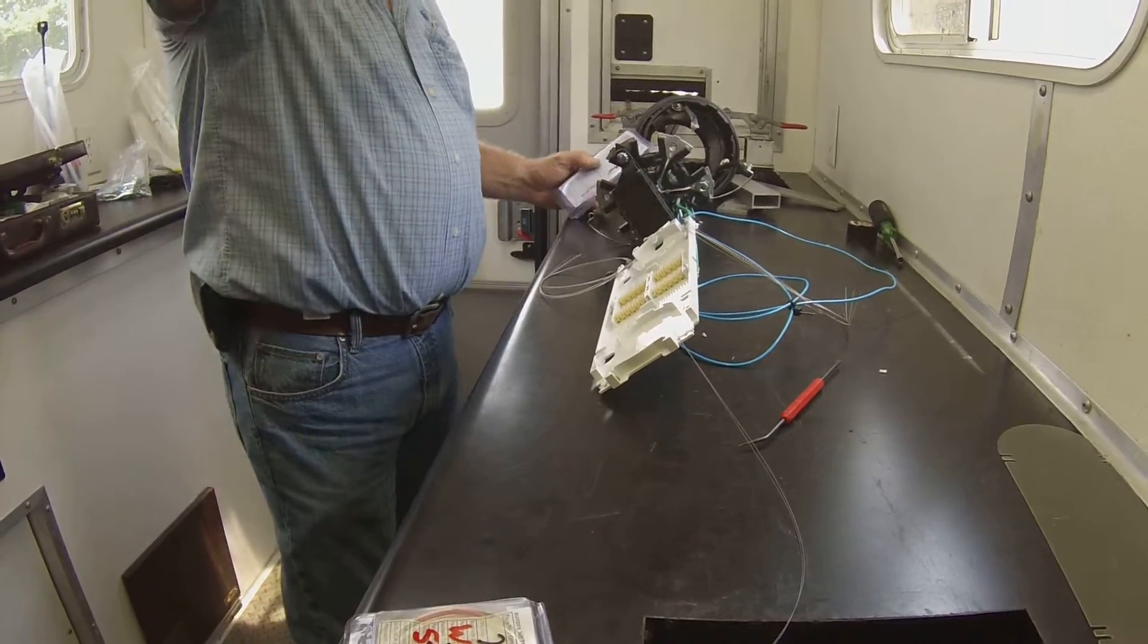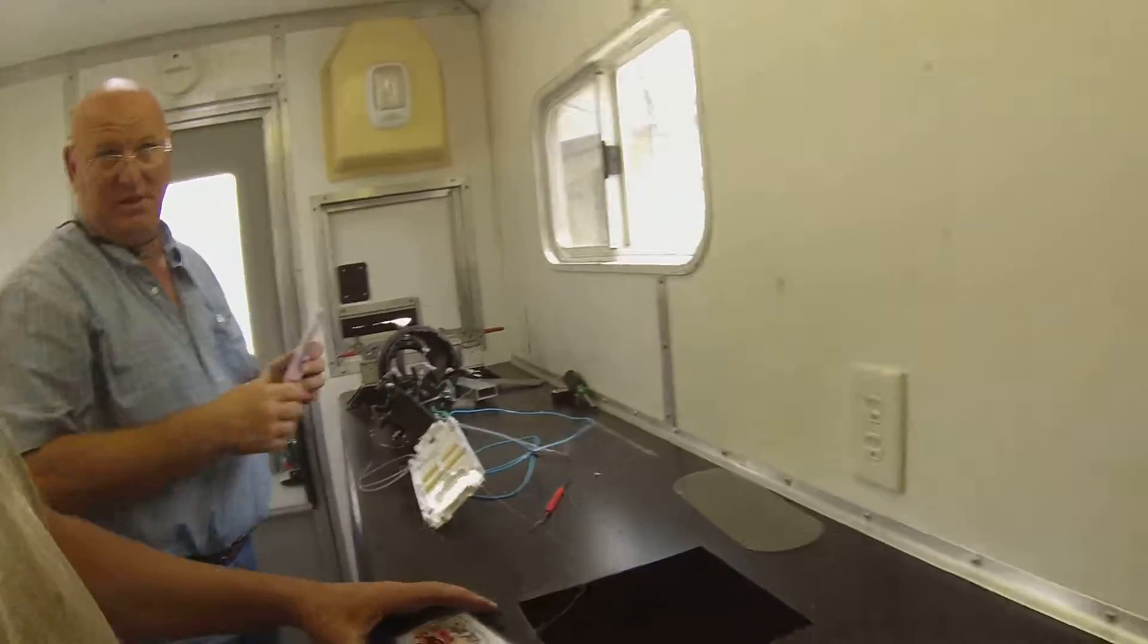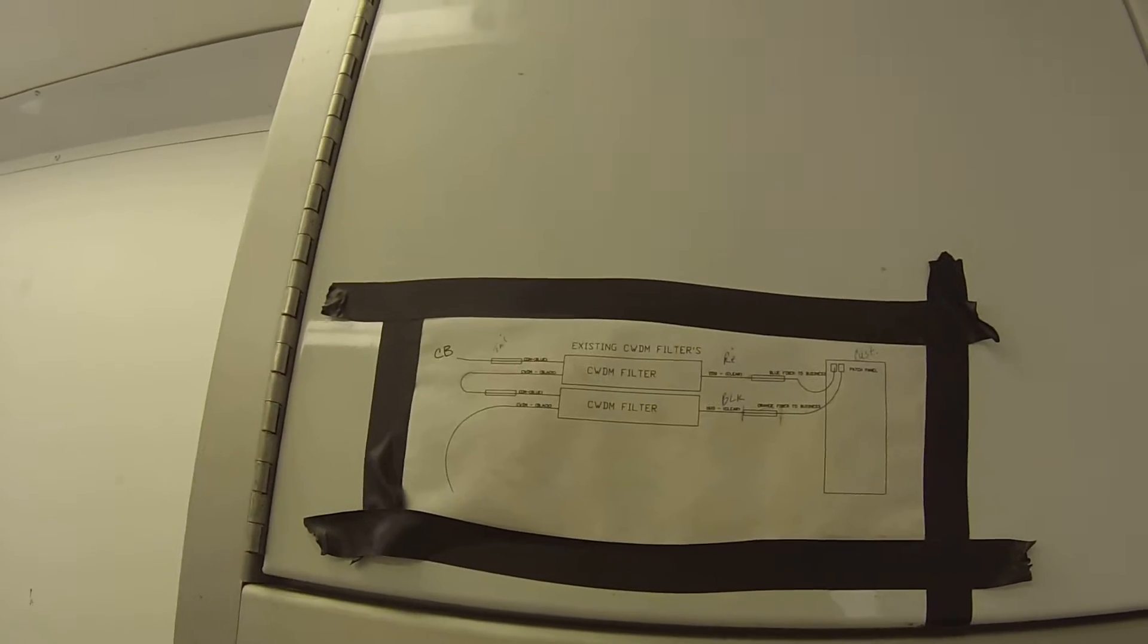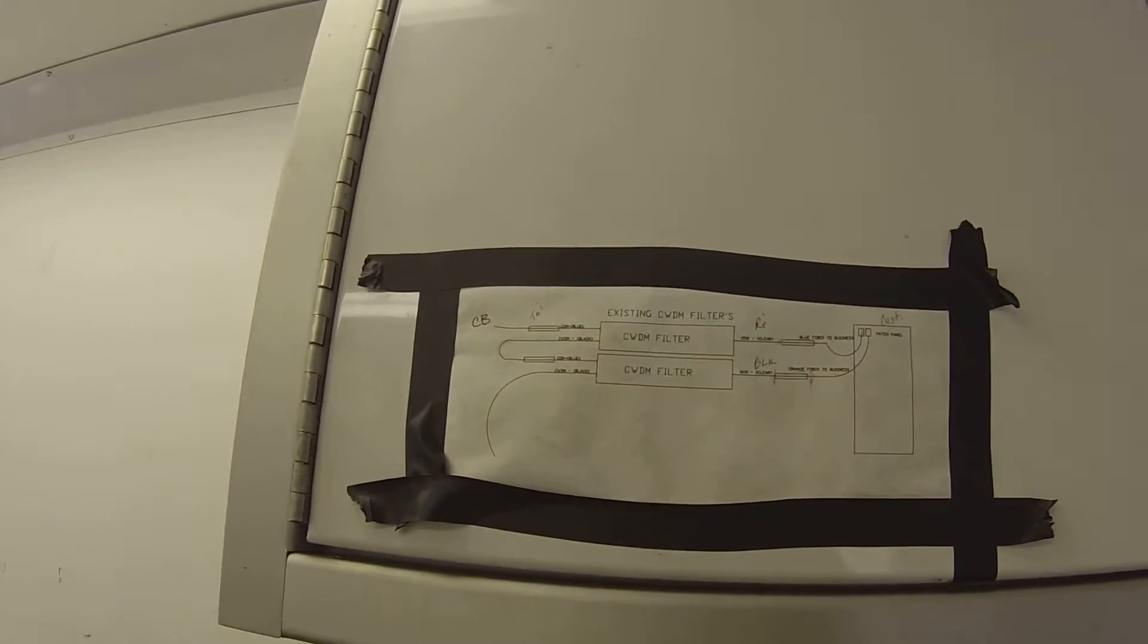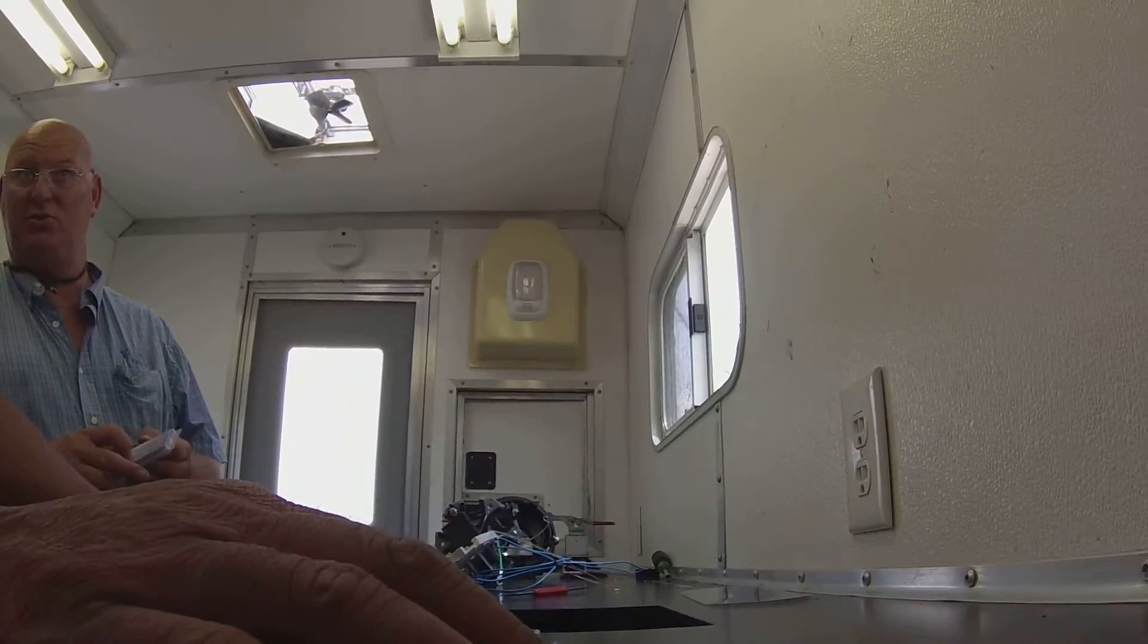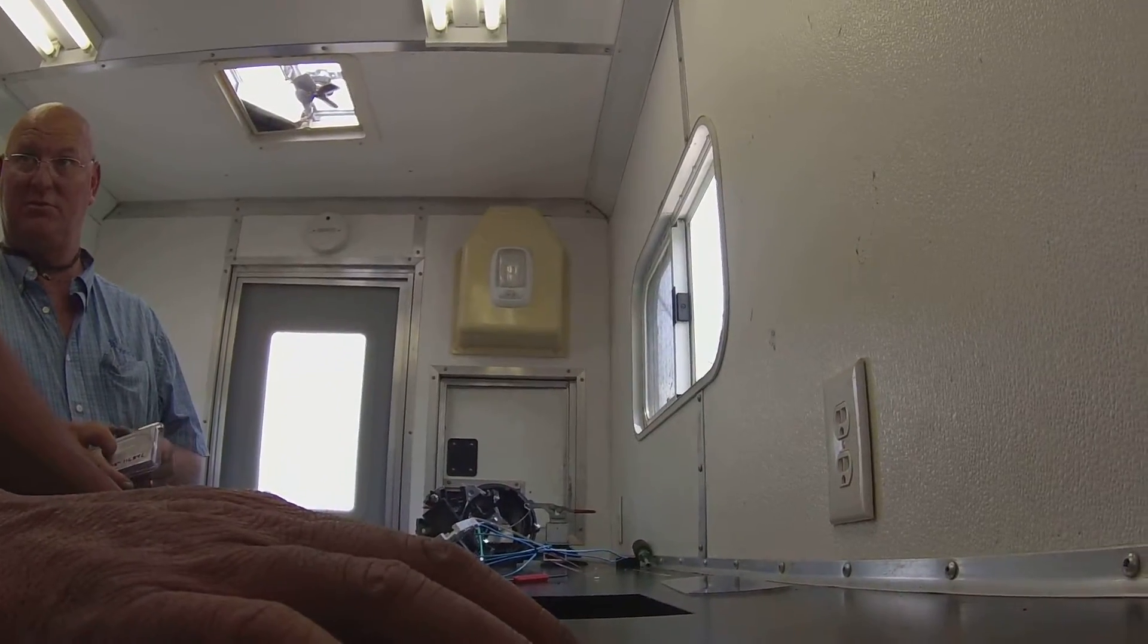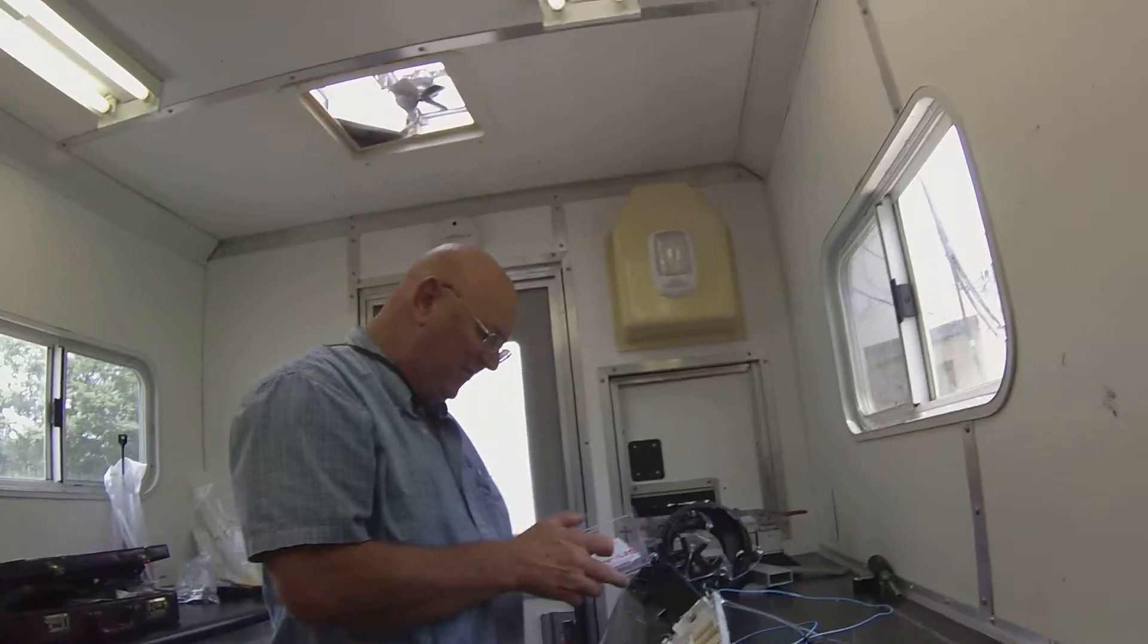So now, if you look up there, there's a filter diagram. To your right is the customer. So your blue fiber is going to what filter? 1510 clear. Yeah. Okay, 1510.